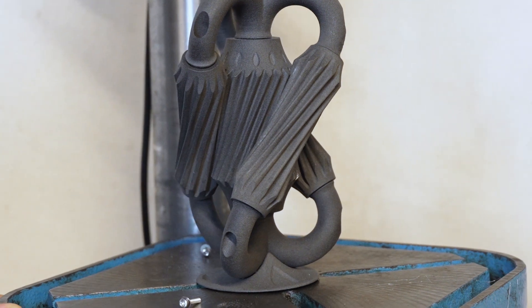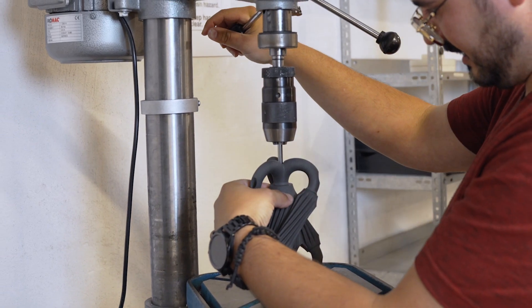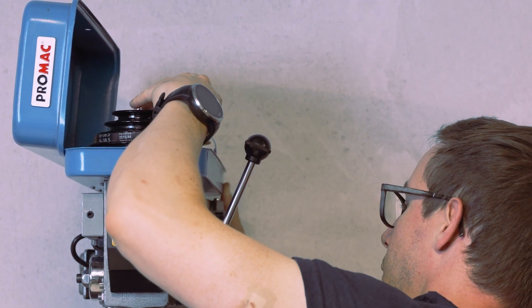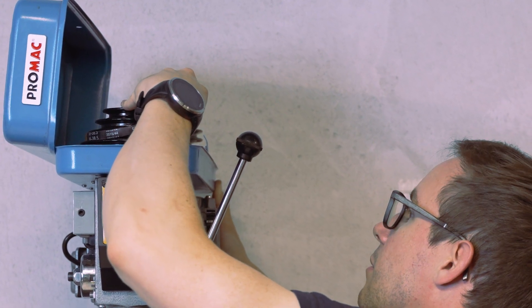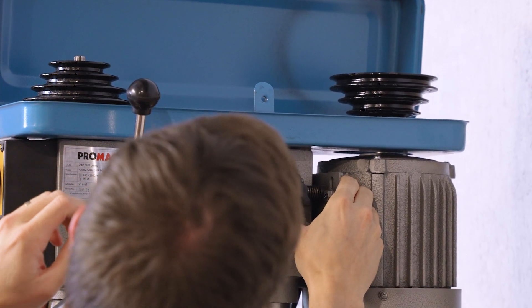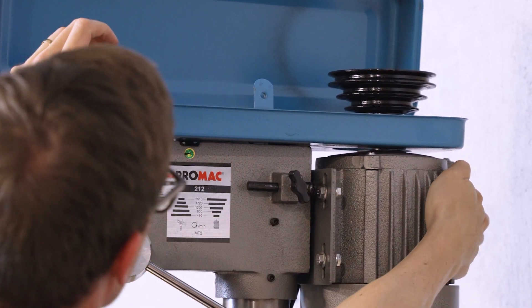But we were not satisfied with that result. We wanted to see how far we could go with the PA12 part. To really push the hyperbolic gear to its limits we decided to increase the speed from 490 rpm to a whopping 1200 rpm. More than double the original speed.